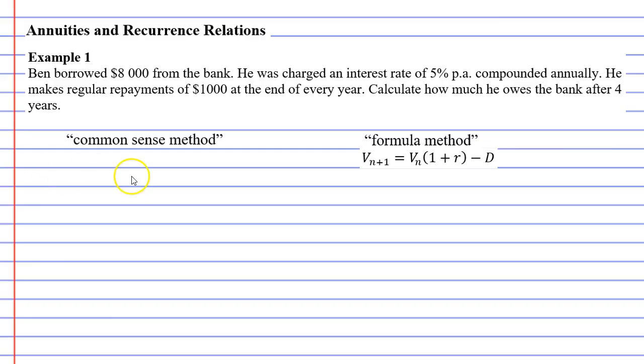Let's use that for example one. Let's start with how much Ben owes the bank. He owes the bank $8,000. That's how much he borrowed. And this is at the beginning of the loan. I'm going to use a little bit of notation that comes from our formula. V with a subscript of 0 equals $8,000. That just means that the value of the loan after 0 years or at the beginning of the loan is $8,000.